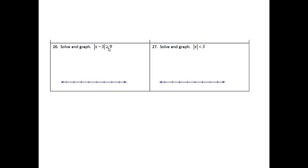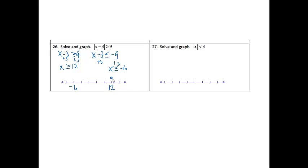Problem 26, we've got some absolute value graphing. With the absolute value inequality, we're going to get x minus 3 is greater than or equal to 9, and also x minus 3 is less than or equal to negative 9. Notice I changed the sign and changed the sign on my number. Adding 3 to both sides of each: x is greater than or equal to 12, and x is less than or equal to negative 6. On the graph, negative 6 goes on the left and 12 goes on the right. They both get a closed circle because there's an equal sign. Greater than 12 points right, and less than negative 6 points left.